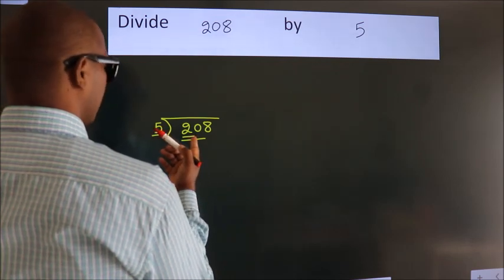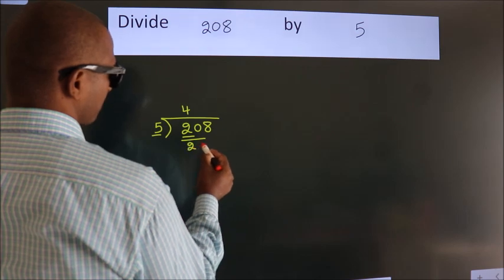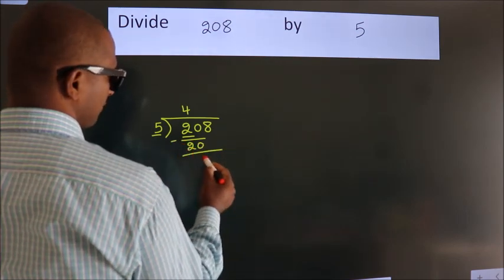When do we get 20 in 5 table? 5 fours 20. Now we should subtract. We get 0.